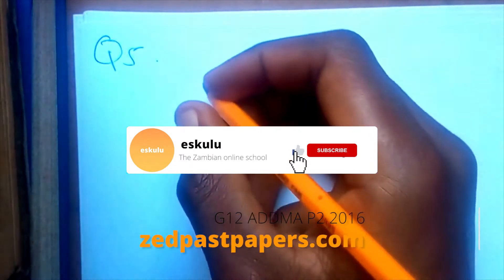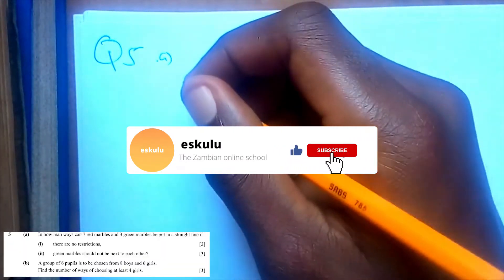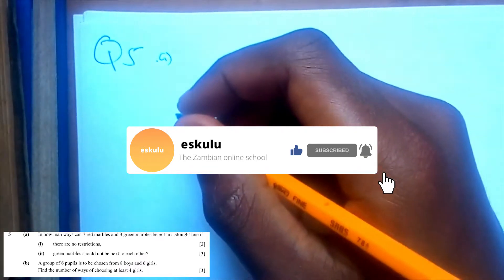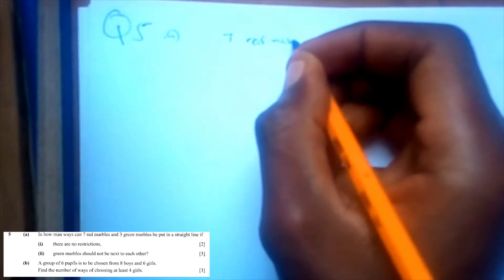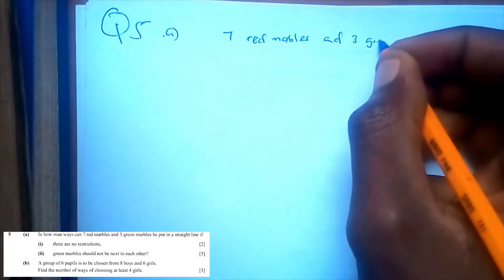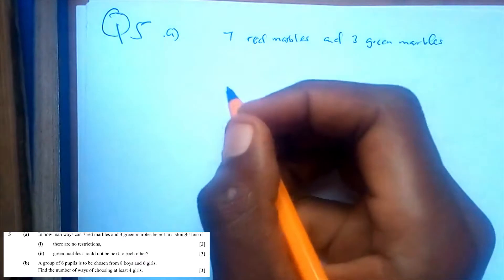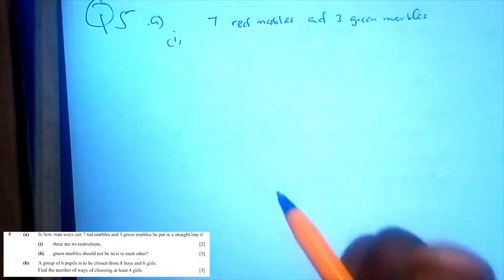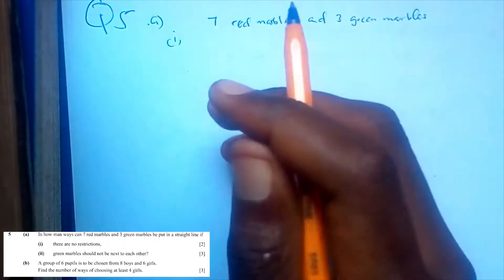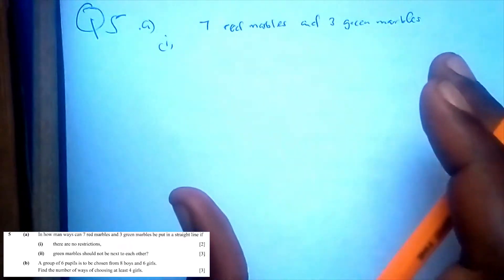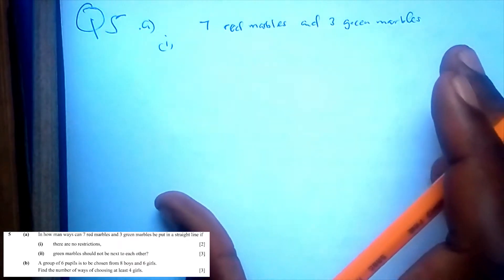Question 5a reads: in how many ways can 7 red marbles and 3 green marbles be put in a straight line? Here there are no restrictions. If you have no restrictions, it means that it's just an arrangement, and when you find that you only have an arrangement, you should know that that is a permutation.